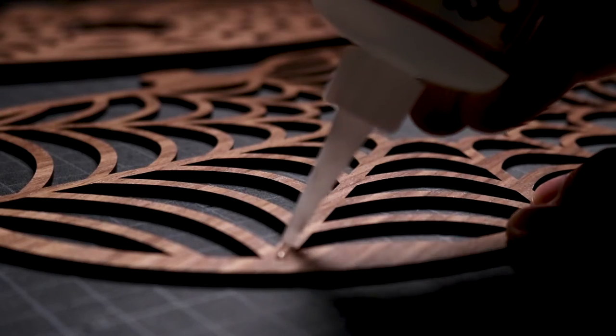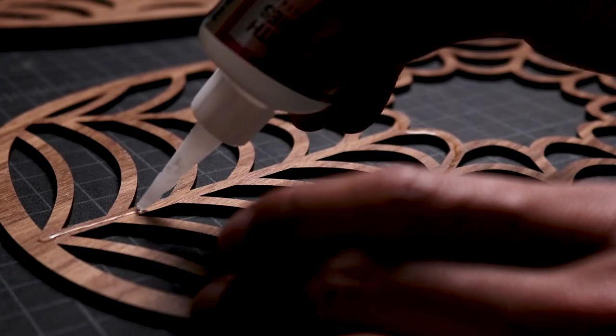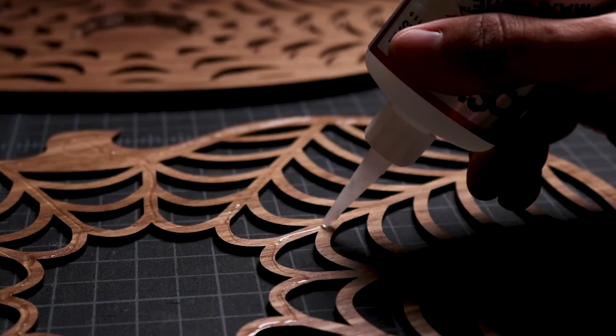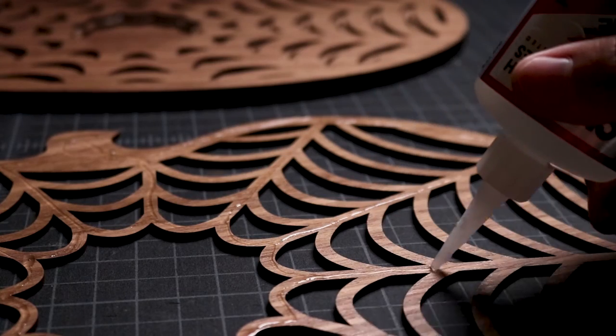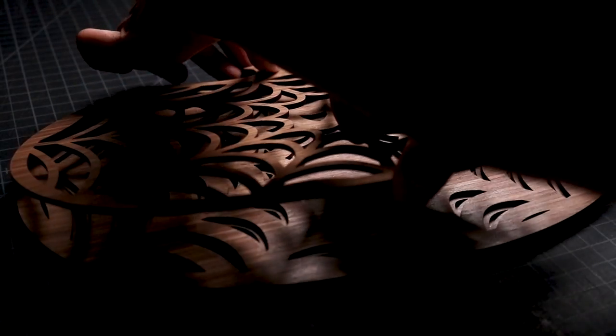As the lines in the mandala get thinner, I decided not to apply glue on the entire cutout, but instead I applied the glue on all the straight lines from the center of the spiderweb to the perimeter and also on some of the curved lines.